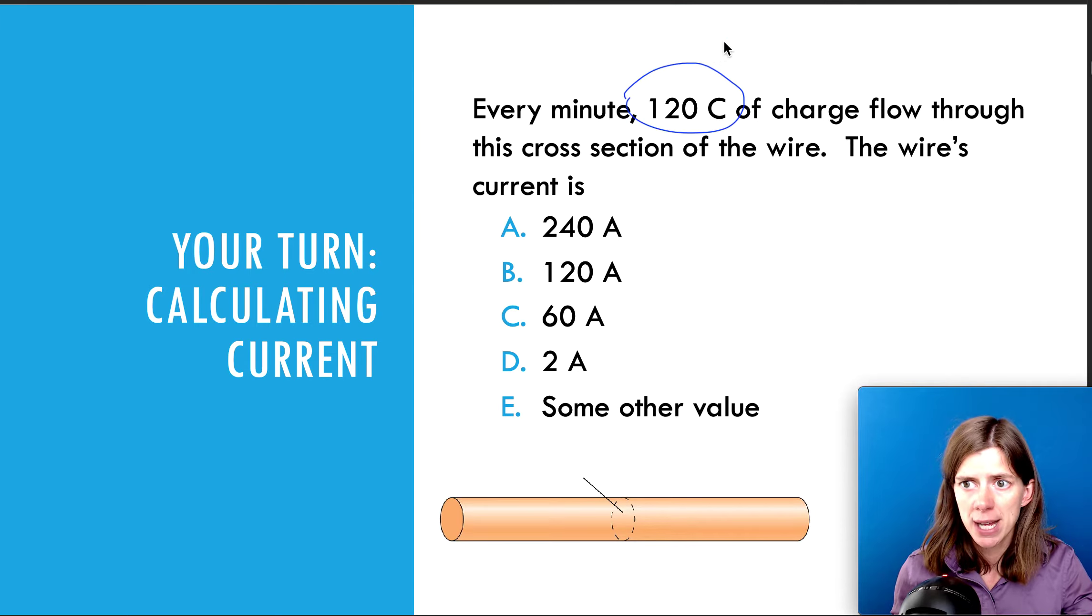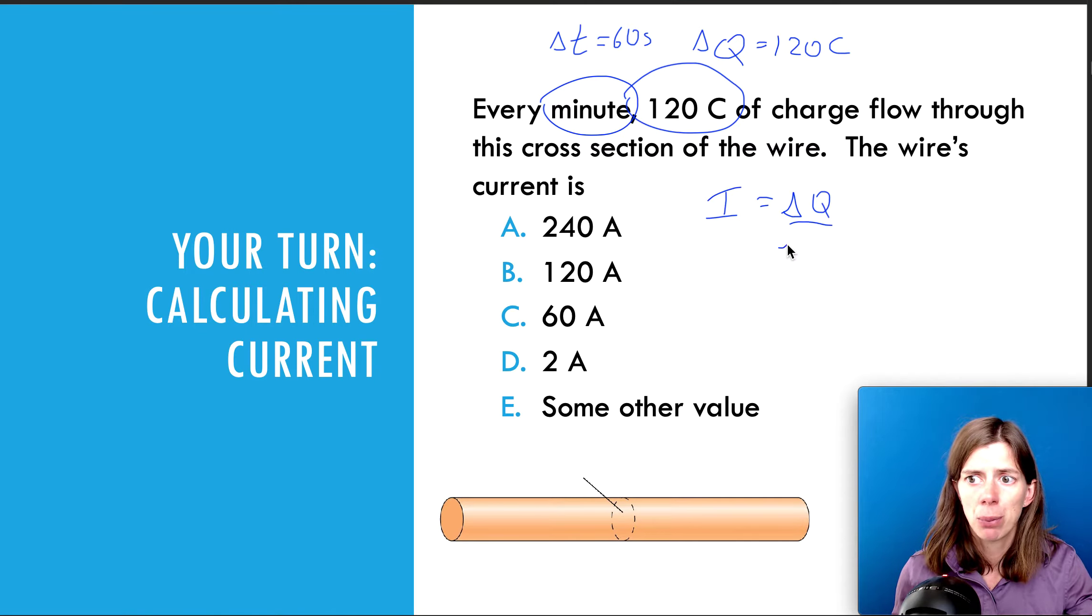We are given the charge. That's Q. And the time is a minute. We can call it delta T. Again, we can call it delta Q or just Q, delta T or just T. The time is a minute. But time must be in seconds. So, the time is going to be 60 seconds. The charge is going to be 120 coulombs. So, the current is the charge per time. So, it's going to be 120 divided by 60. So, it's going to be 2 amps. That's coulombs per second is amps. So, that is the current in the wire.